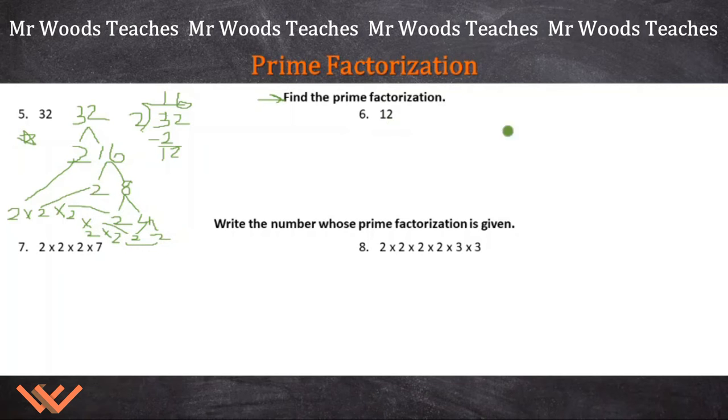Look at number 6. We have 12. 12 again. Oh, no. This one's simple because it was a mistake. I'm not going to go back and make a new slide. We already know that 2 times 6 is 12 and then 2 times 3. So 2 times 2 times 3 equals 12.